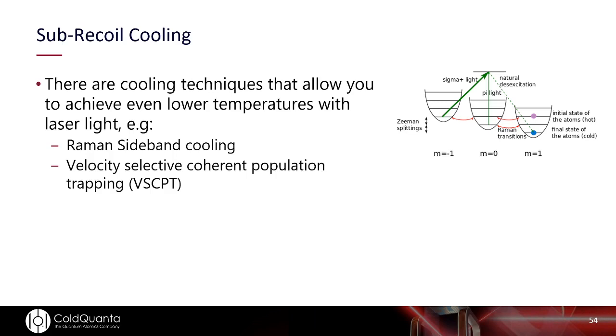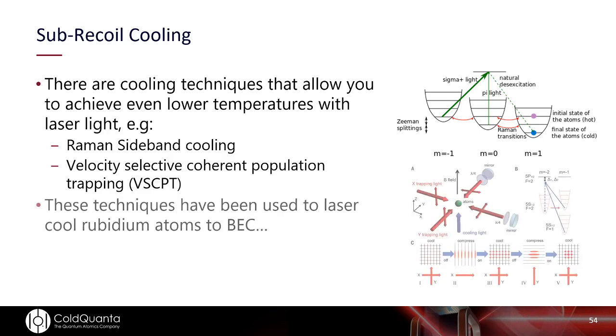And that's cold enough to be quite useful and quite interesting, but it's still actually not cold enough to really take advantage of quantum effects. For that we usually have to go to some form of sub-recoil cooling. This is often done by turning all the lights off and doing evaporative cooling in the case of if you're making Bose-Einstein condensate. But there are techniques to get lower and lower energy levels such as Raman sideband cooling or velocity selected coherent population trapping. This goes a little bit beyond the scope of this particular lecture, but it's worth noting that these techniques are commonly used in the field and they've even been used to laser cool atoms directly to a degenerate Bose gas.